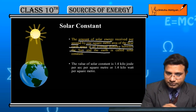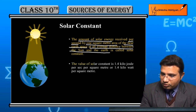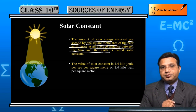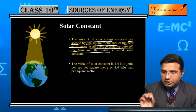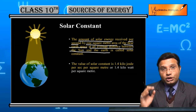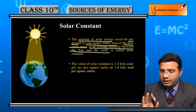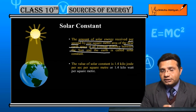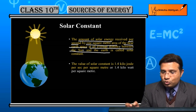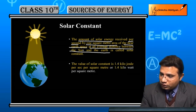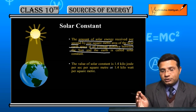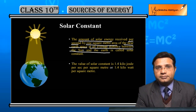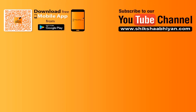Now, what is the value of the solar constant? The value of solar constant is 1.4 kilojoules per second per square meter. That means the one square meter area receives 1.4 kilojoules of energy per second — that is the value of the solar constant. We can also represent this as 1.4 kilowatts per square meter, since kilojoules per second converts to watts. So in this form we can also represent the value of the solar constant.